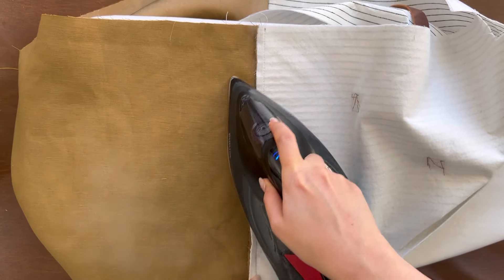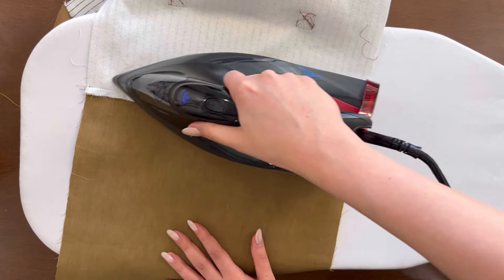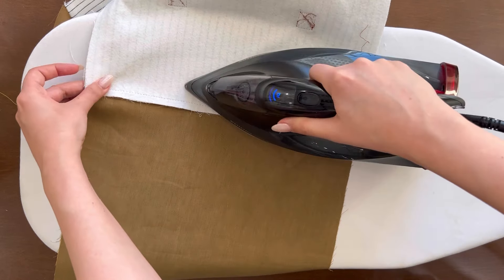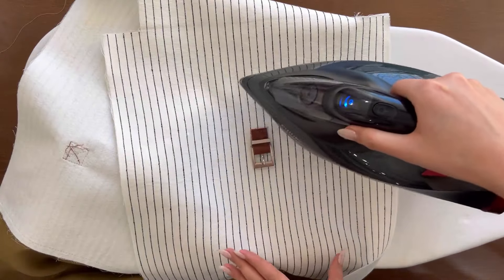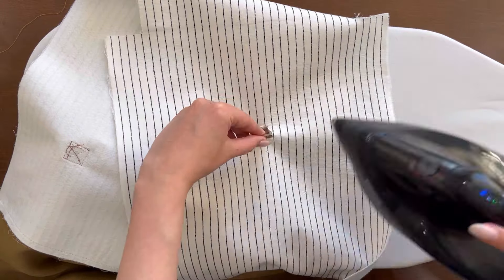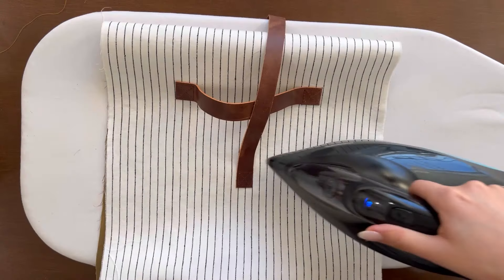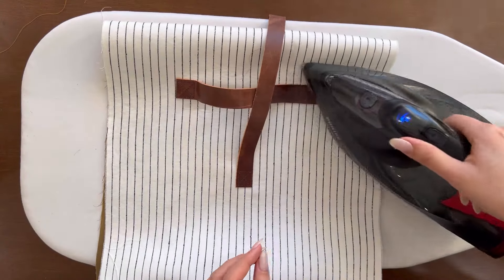For the seam on the other side, press the seam towards the lining. Since I am using an erasable pin, I use the seam to erase the marking on main fabric and the leather after sewing.